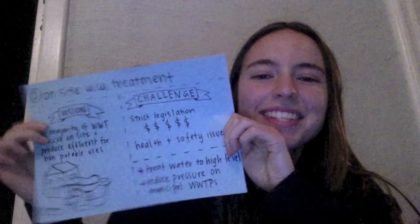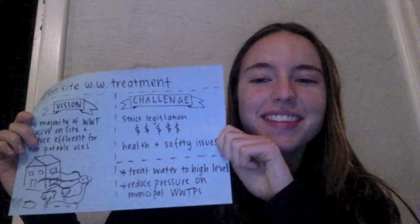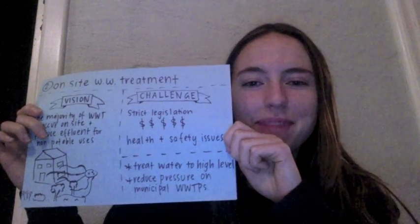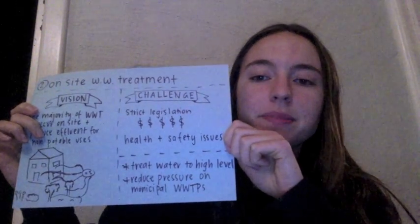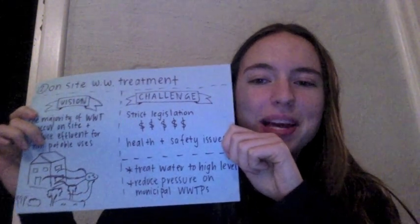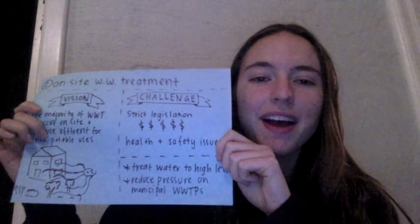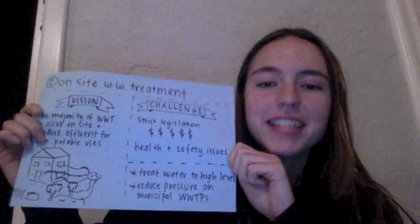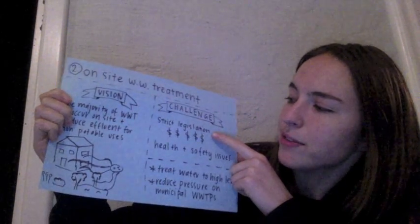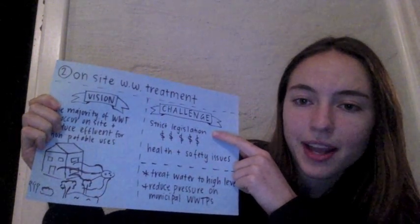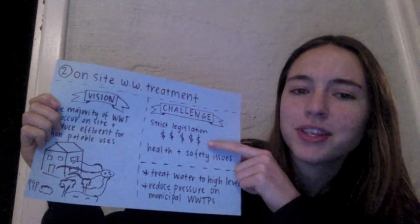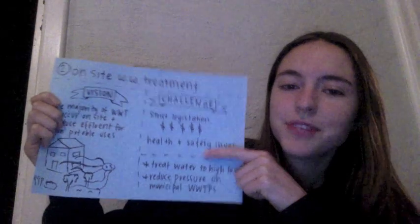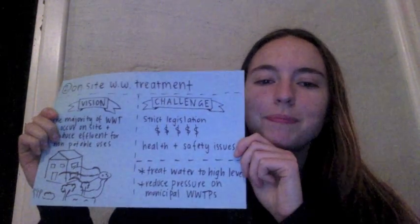Secondly, I see a future with innovations in on-site wastewater processing, which will reduce the need to expand current wastewater treatment plants and to build new ones. Hopefully these units will be able to treat water to secondary quality and reduce nutrients so that it can be used for non-potable uses. The key challenge will be addressing the strict legislation to make this an easier and less costly option, as well as ensuring health and safety issues are not created. To read more about this idea, read my blog below.